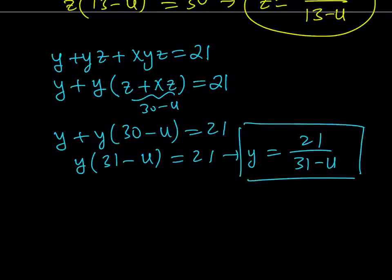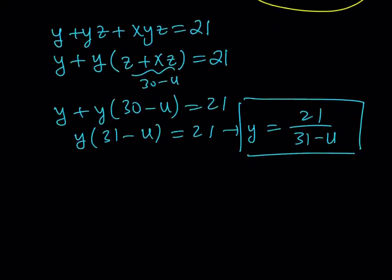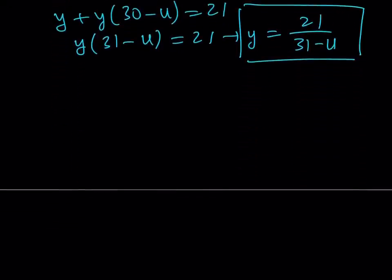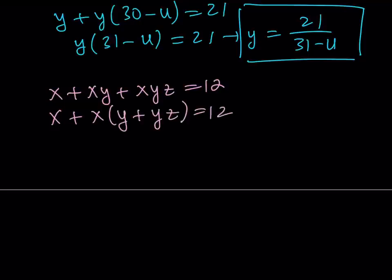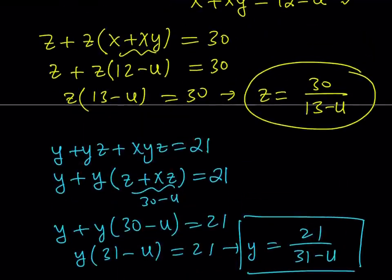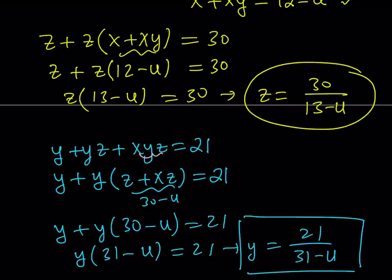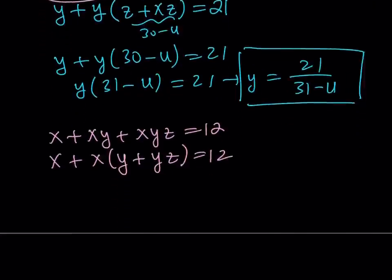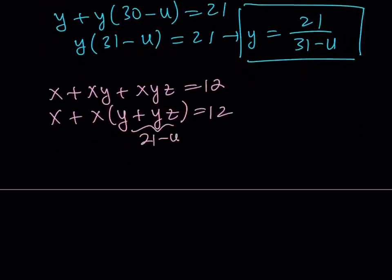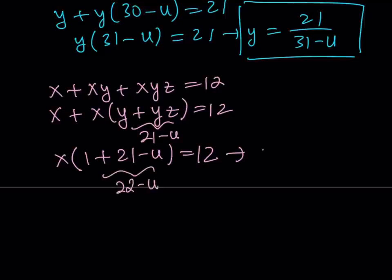So that gives you the value of y in terms of u. We got the value of z in terms of u. Now is the time to take care of x. So let's go ahead and do that. And how do we do that? Well, if you look at the first equation, you have x plus xy plus xyz is equal to 12. And then if you factor out an x like before, y plus yz equals 12. And as you know, y plus yz. Now, if you look at the second equation from here, this is u. y plus yz can be written as 21 minus u. y plus yz is 21 minus u. And you can just write it as x times the quantity, 1 plus 21 minus u equals 12. I guess this time I showed my work. And this becomes 22 minus u. And if you isolate x, it becomes 12 divided by 22 minus u. Great.